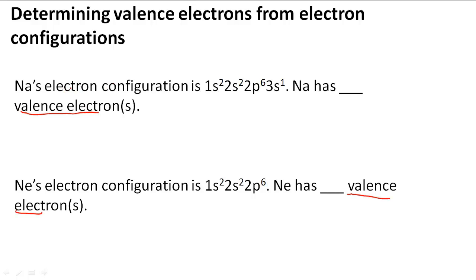Sodium's electron configuration is 1s²2s²2p⁶3s¹. Na has how many valence electrons? To figure out this problem, we'll take a look at the electron configuration.